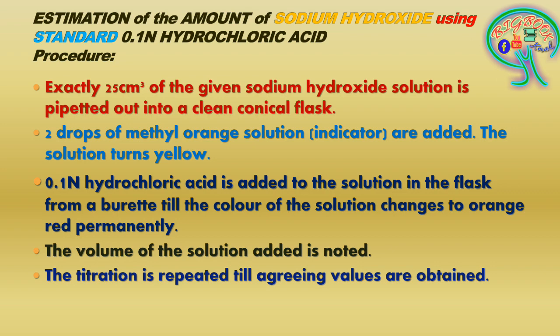Coming to the procedure: exactly 25 cm³ of the given sodium hydroxide solution is pipetted out into a clean conical flask. Further, two drops of methyl orange solution are added. The solution turns yellow — remember the indicator name is methyl orange. Since sodium hydroxide is a basic solution, the solution takes on the yellow color of the indicator.